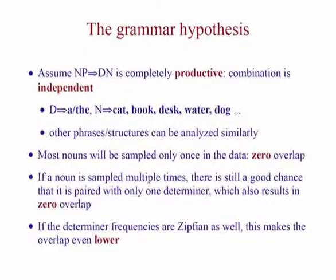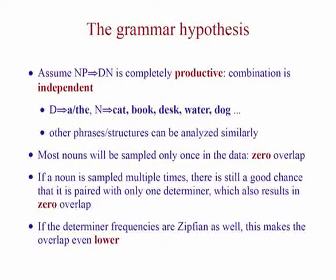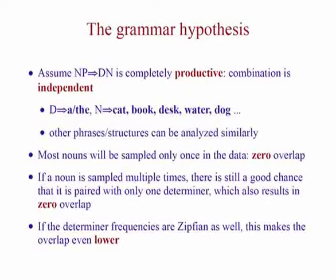Let's look at what a grammar model would actually predict. This is a grammar model: NP equals a determiner followed by a noun. The determiner is either 'a' or 'the'; the noun is a bunch of singular nouns. Let's assume this rule is completely productive — the combination of the two are completely independent. If you think about Zipf's law, this immediately gives you why the rate of overlap is fairly low. If you take a sample of nouns, a lot of them are going to occur only once, and if they occur only once, they can only pair with one determiner.